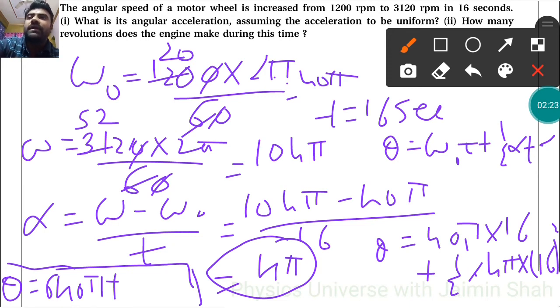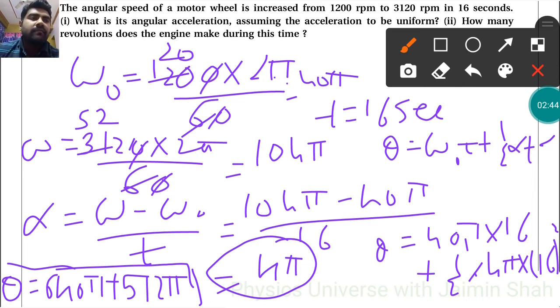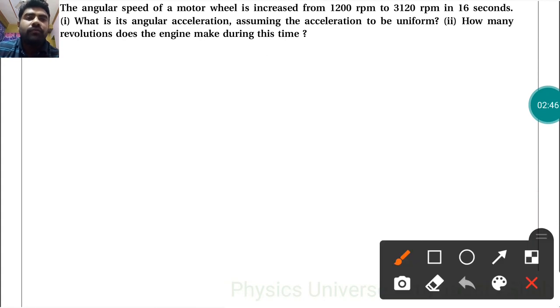This gives us 512π. So we get 640π + 512π = 1152π.